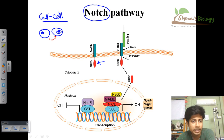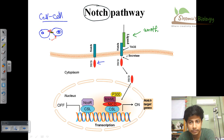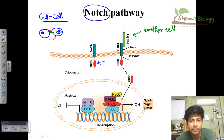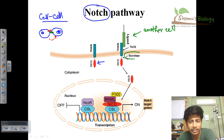In the case of Notch Signaling, the Notch Receptor is present on the surface of one cell, while a nearby cell presents a ligand on another type of receptor. This ligand, shown here in green, comes from the neighboring cell and interacts with the Notch Receptor. This ligand-Notch binding causes a slight modification in structural conformation, activating a protein called gamma secretase.